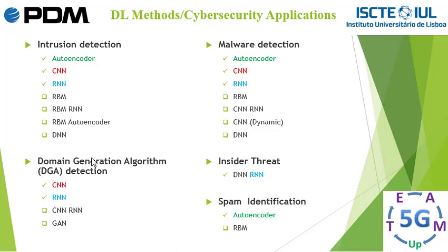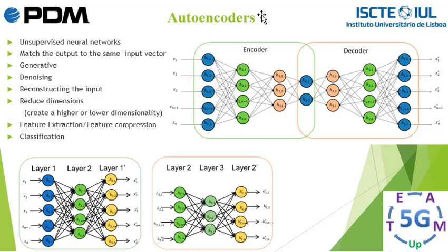In the continuation, we talk about the autoencoder as an example, since we cannot explain all of these methods. What is an autoencoder? An autoencoder is a subset of unsupervised neural networks. To use an autoencoder, you don't need labeled data — you only need the data itself, without labels or output. The goal is to match the output to the same input vector. We have two kinds of networks: generative and discriminative. Autoencoders are generative. Some applications of autoencoders include: denoising, reconstructing the input, reducing or increasing dimensions, feature extraction or feature compression, and also classification.